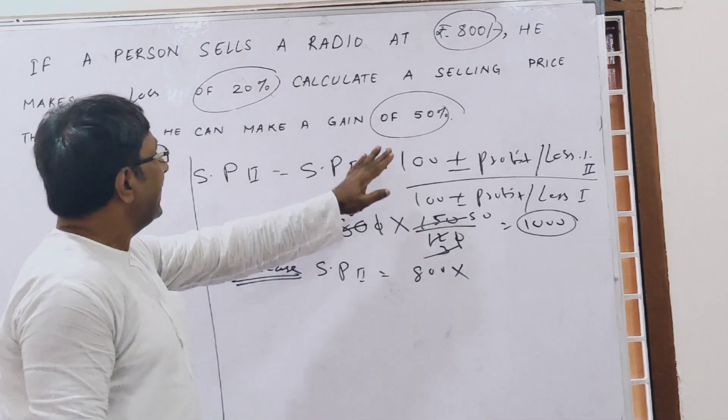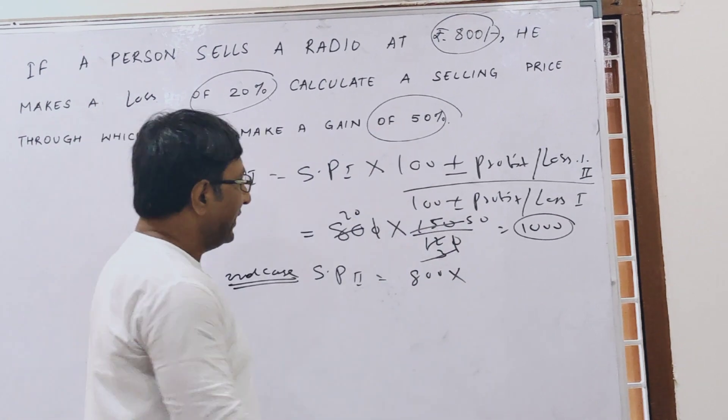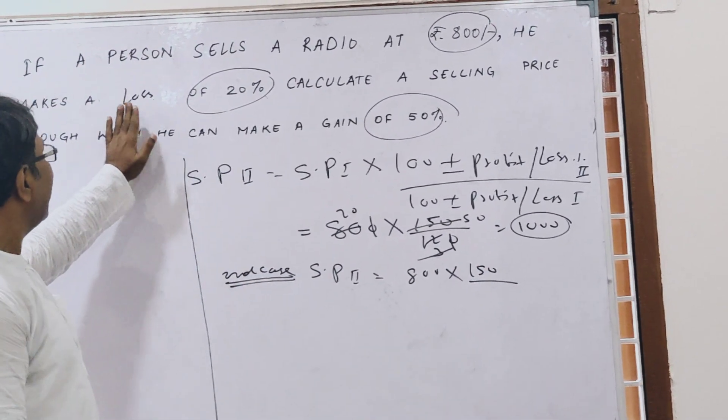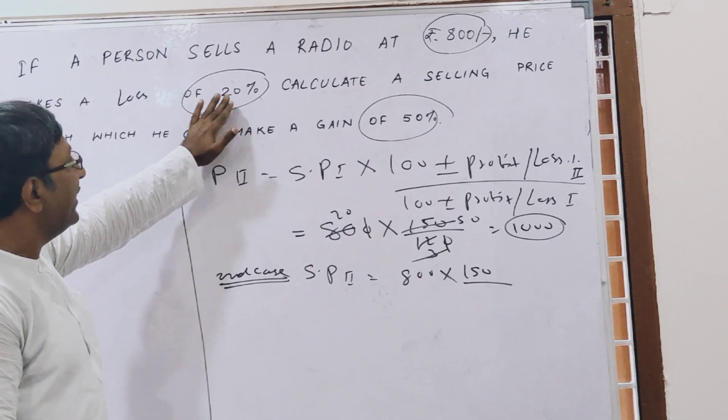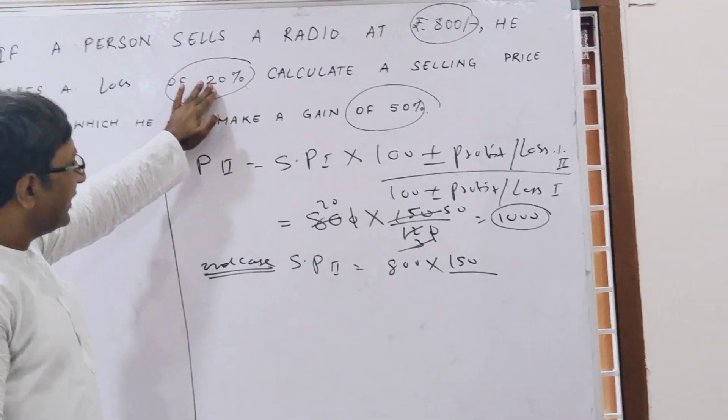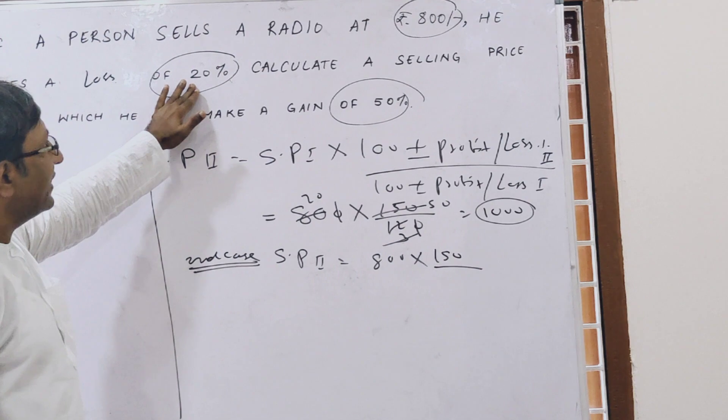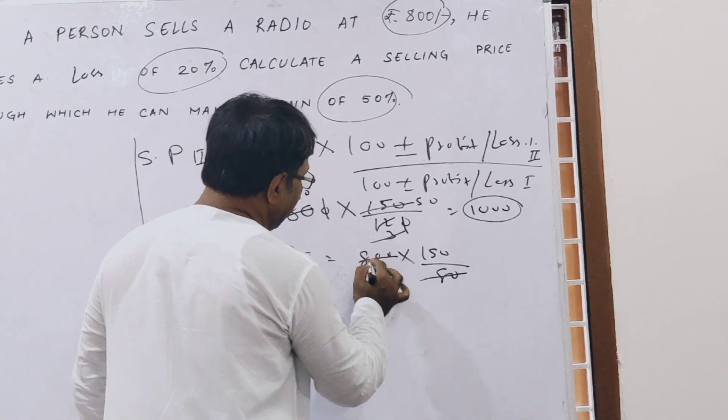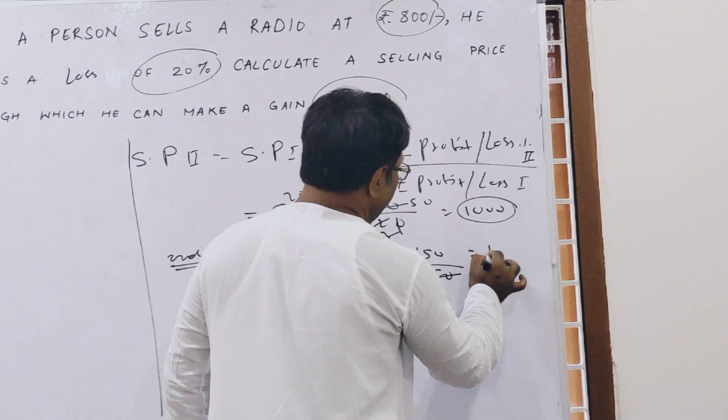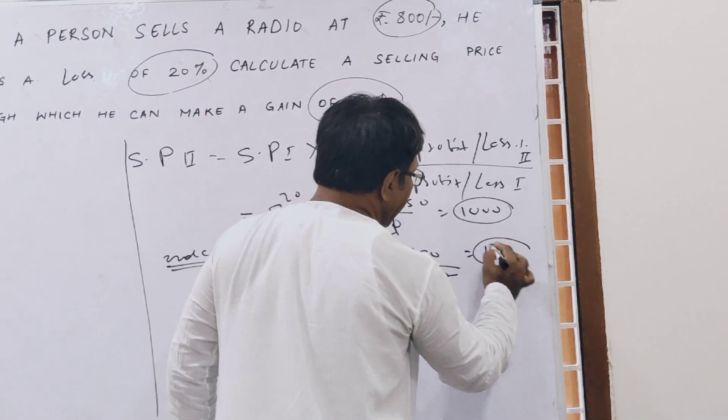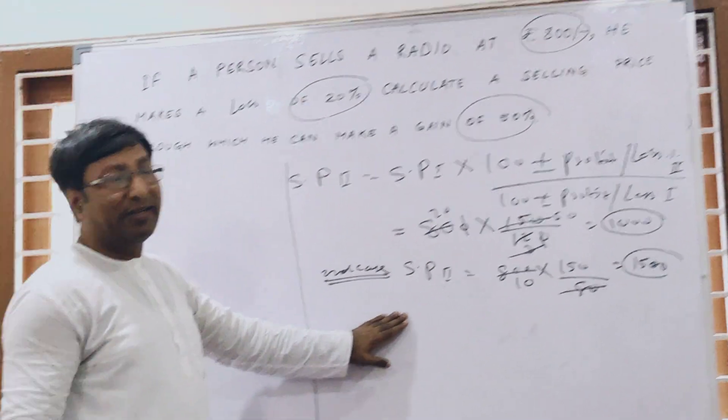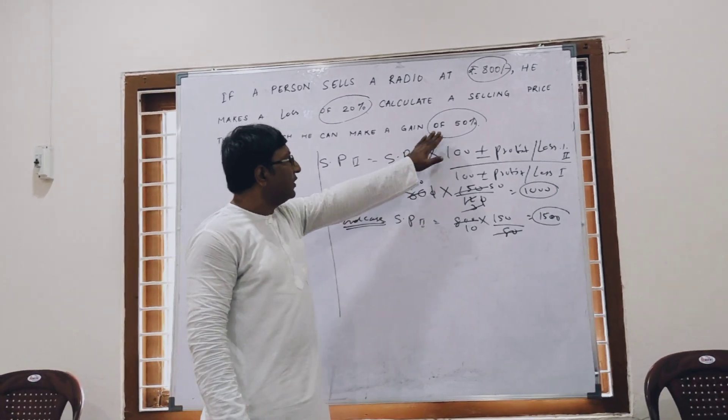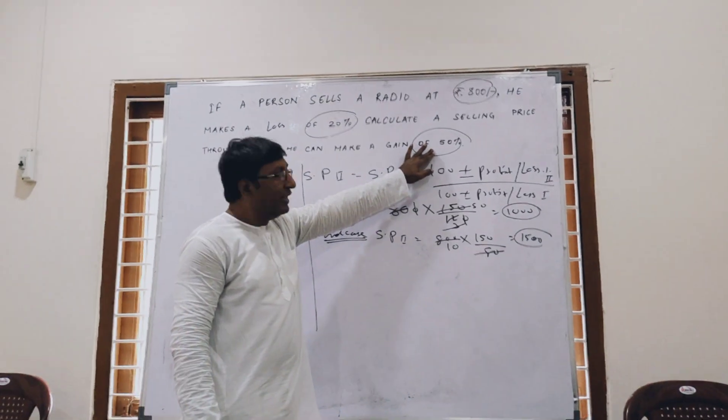What do you want? 50% gain, so there is 150. And in the previous one is getting a loss of 20%, so 20% is here 100 minus 20, that is 80. So 800 into 150 by 80, that is 1500. That means if he sells his article at 1500 then he will get a profit of 50%.